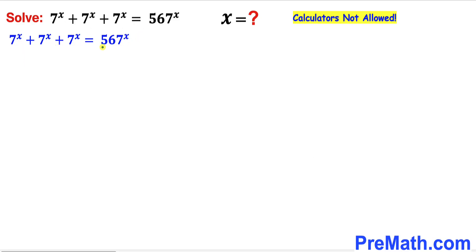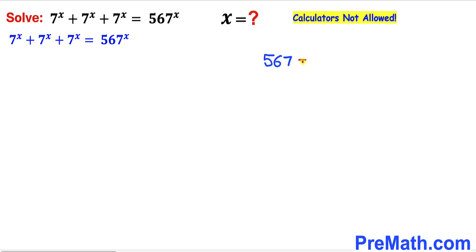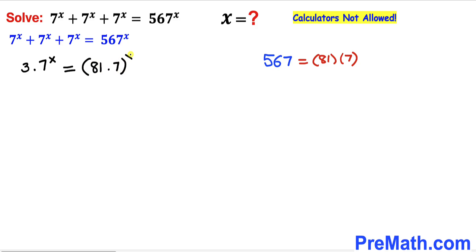Now let's focus on the base 567. Here I have copied down that number and we can see that this number is divisible by 7. So therefore we can write this number as 81 times 7. So therefore the left hand side becomes 3 times 7^x equals the right hand side written as (81 times 7)^x.